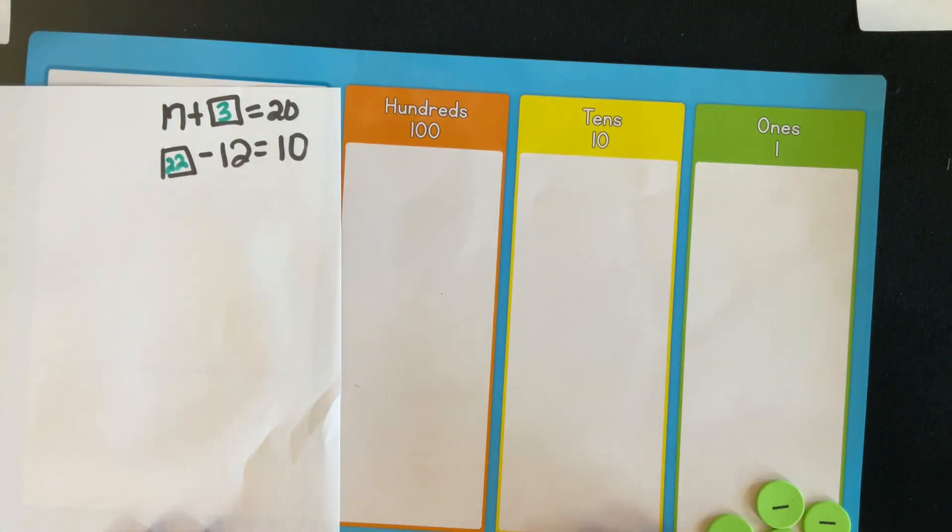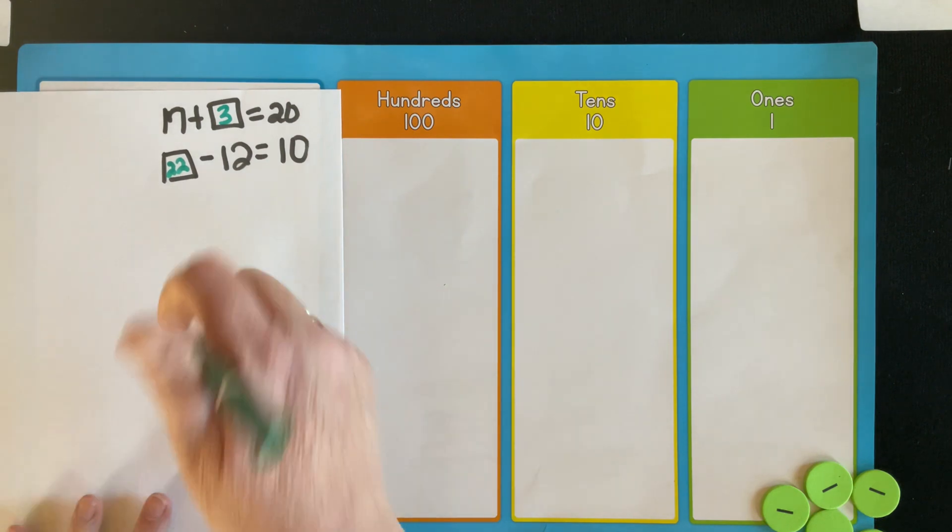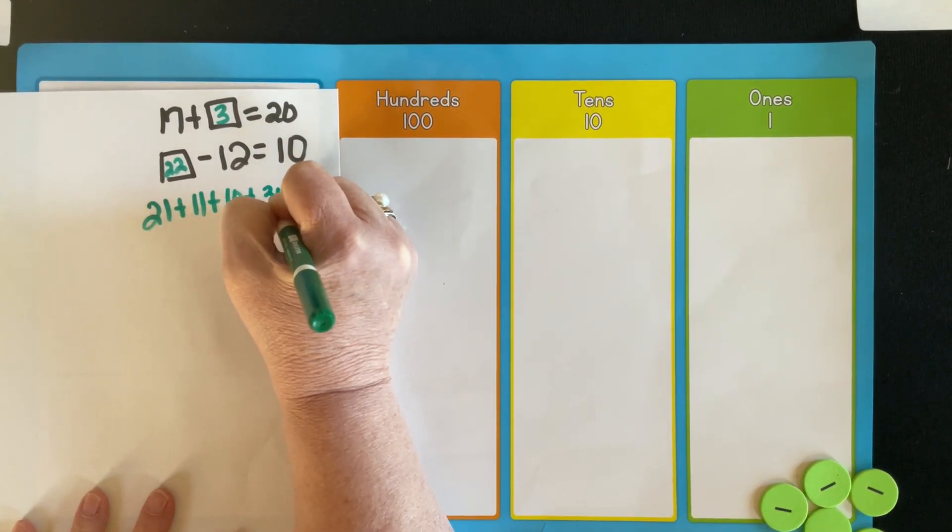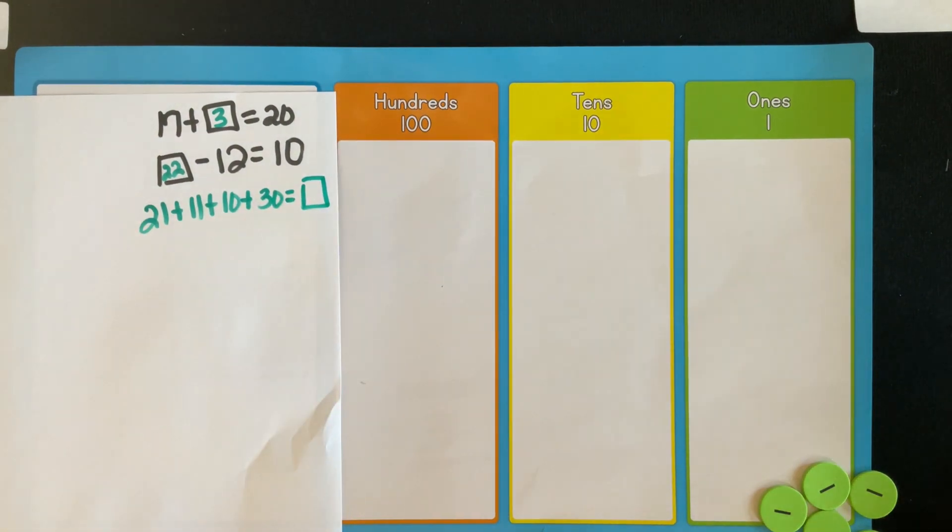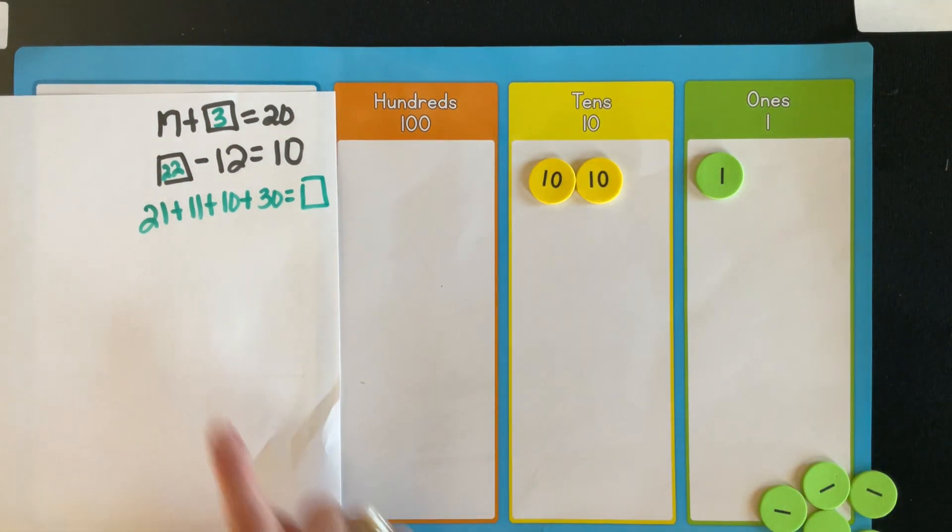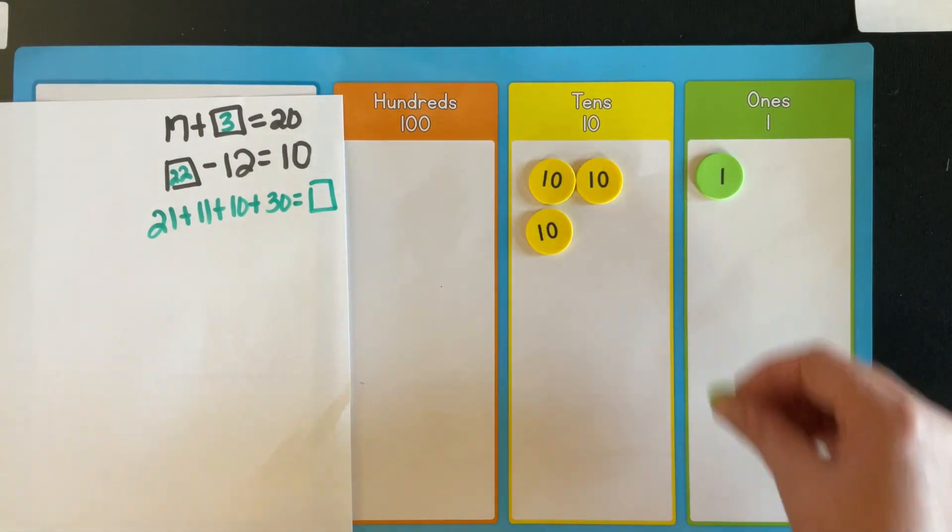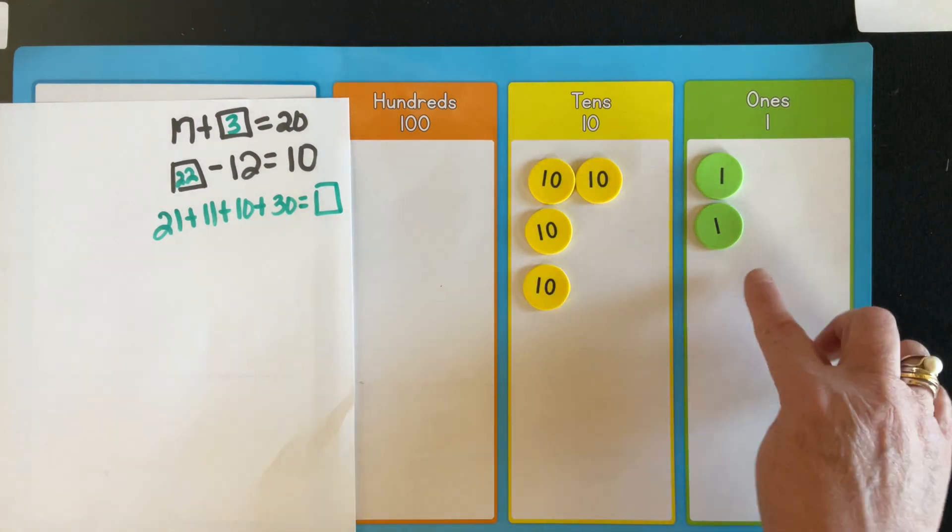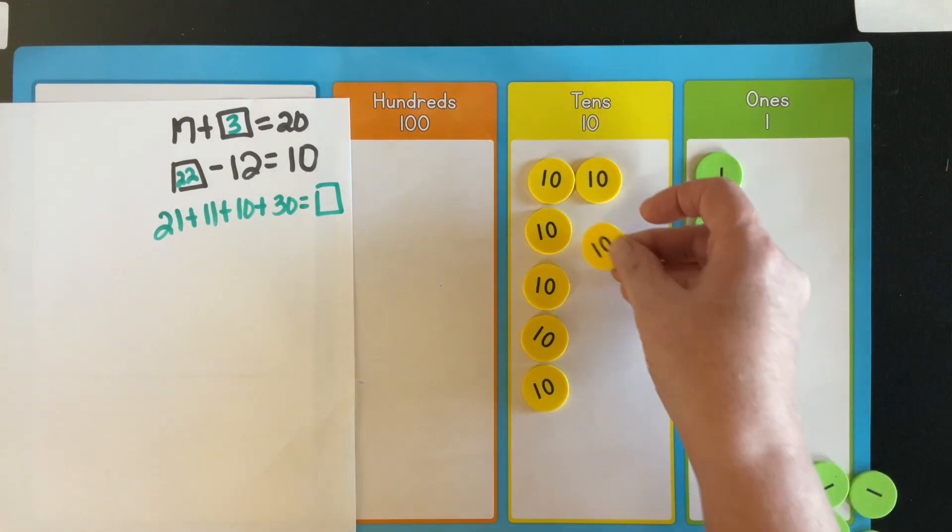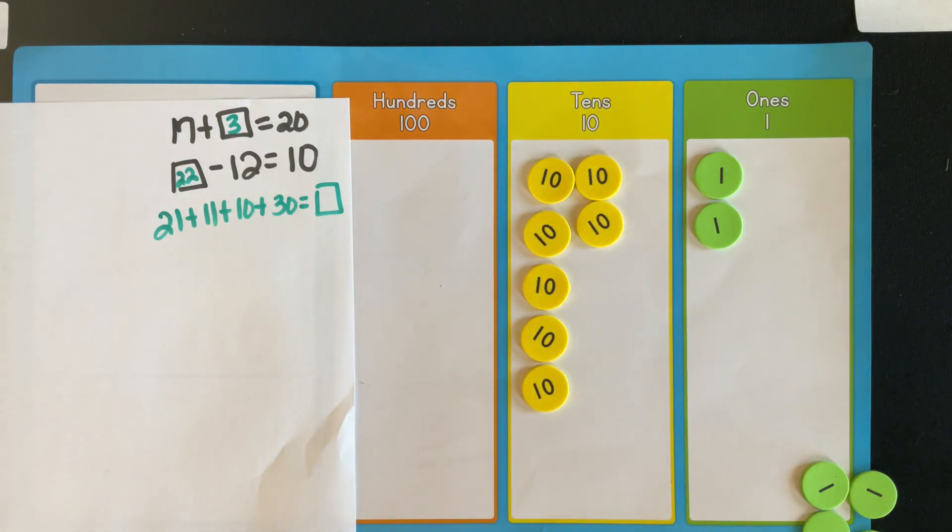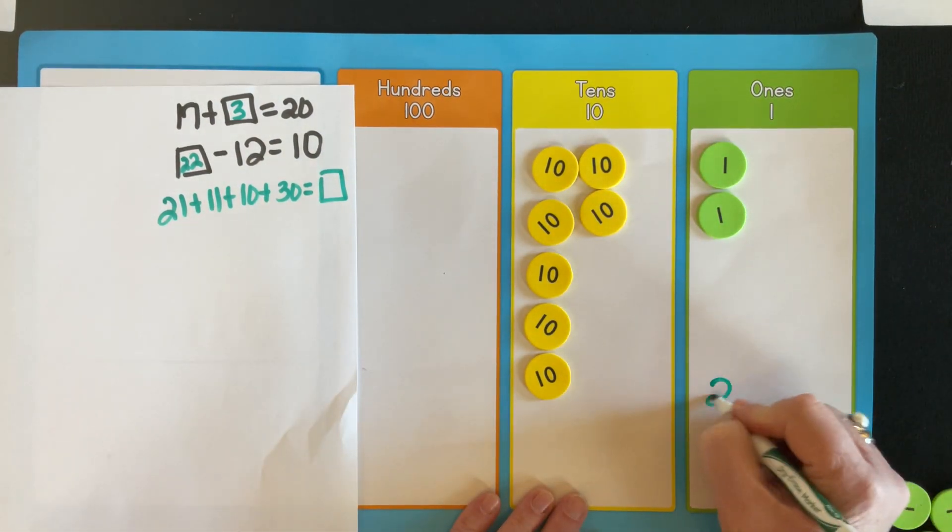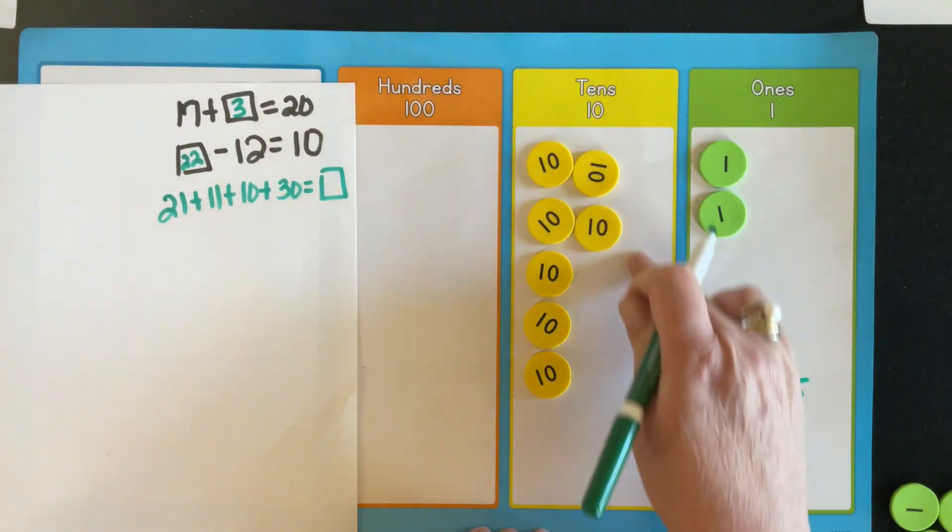In your standards, it also says that we are to add four two-digit numbers. So let's just take a look at this. Now this is not going to be anything different from really just adding to find a missing sum. So the first thing, we're going to represent 21, and 21 is comprised of two tens and one one. Then we have the number 11, which is one ten and one one. Then we have a ten, which is just ten and zero ones. And then we have 30, which is three tens.